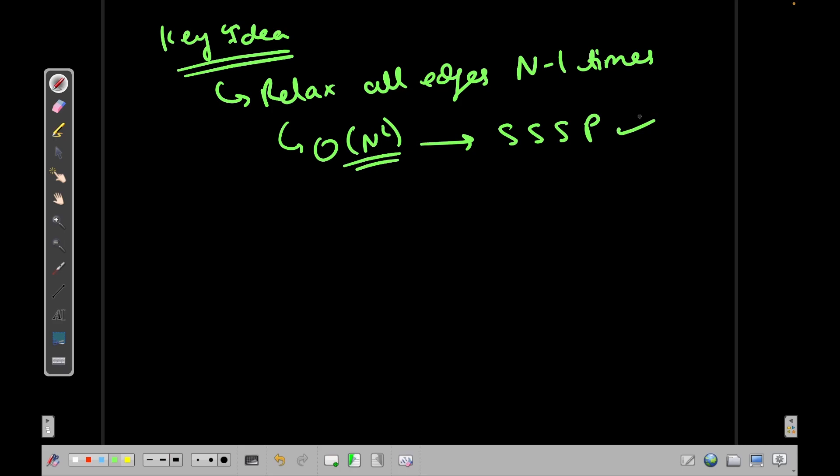And if I do that once more, this will guarantee that I have the single source shortest path. But if you want to check for negative cycles, I can do the same thing again, and if the distance still decreases, then this implies that we have a negative cycle.